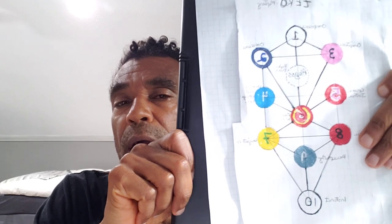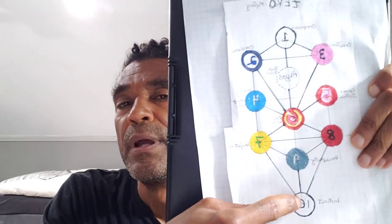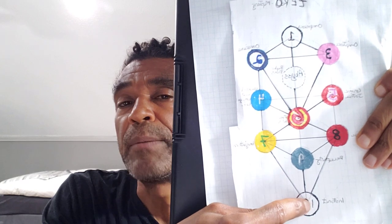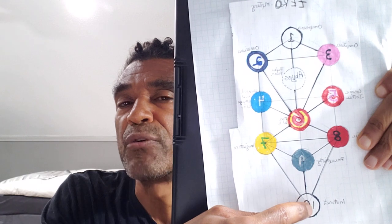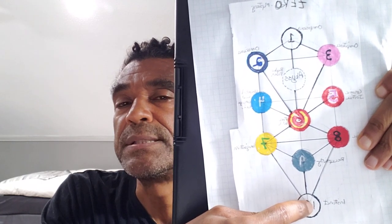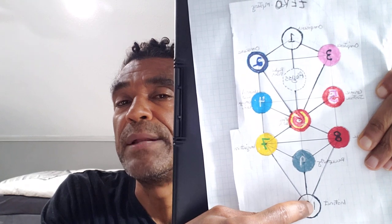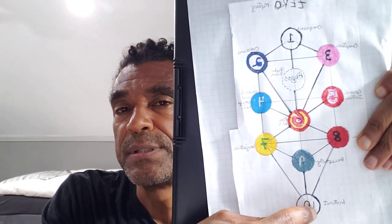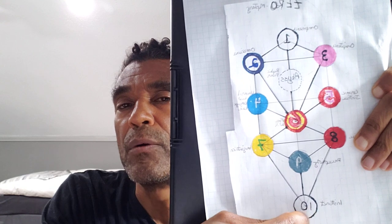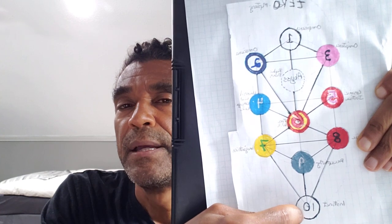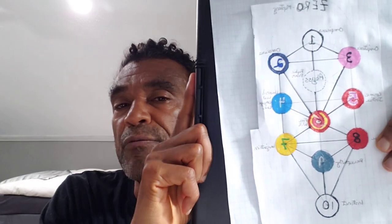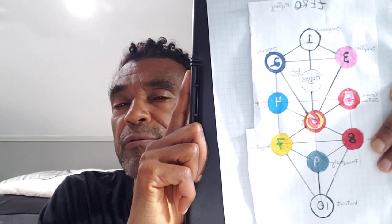The tenth sphere is really our animal, wild animal consciousness — the law of the jungle, survival of the fittest, our survival instinct, our fight-or-flight response. This is what we have when we're born; we already have this basically intact. We have a survival urge hardwired within us.